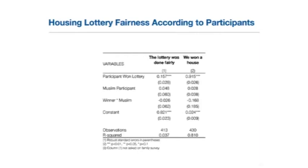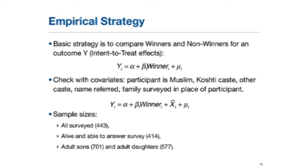Our basic regression strategy is to compare winners and non-winners for many outcomes Y. This is what the regression equation looks like — and then in another set of regressions we add covariates. We're running these on a couple of different samples. One sample is all of the people we surveyed. In some cases where the lottery participant — the beedi worker — has died, we surveyed her husband or preferred replacement. There are some questions that don't make sense to ask if the participants are no longer alive, so in some cases the sample size will be just the women who are still alive. We also have questions about kids — right now we have 701 sons and 577 daughters of the original participants.